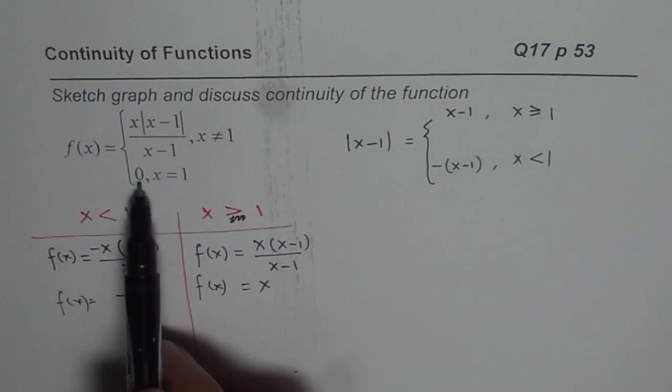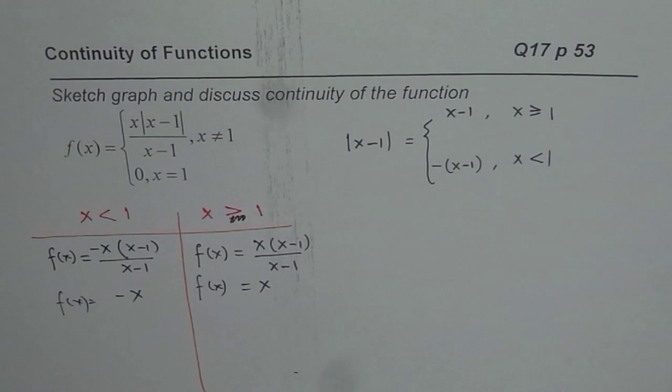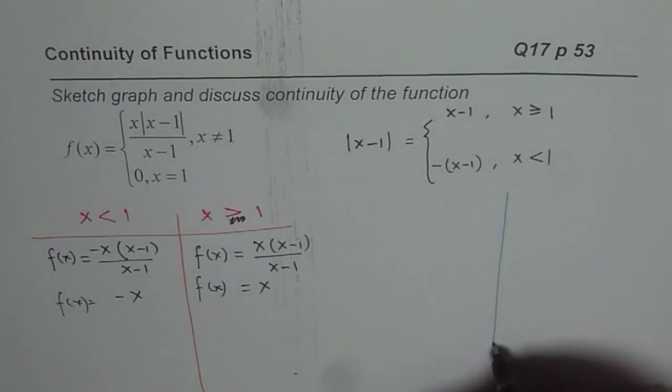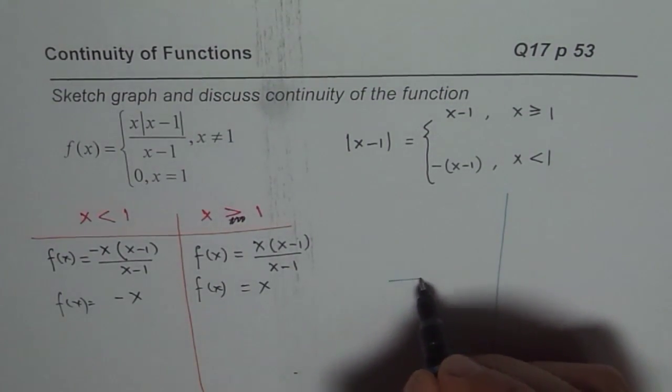Now at 1, we know it is 0, so we don't have to worry about it. So that is how our function is. Now it's easier for us to sketch. We have, in fact, three parts of this function.